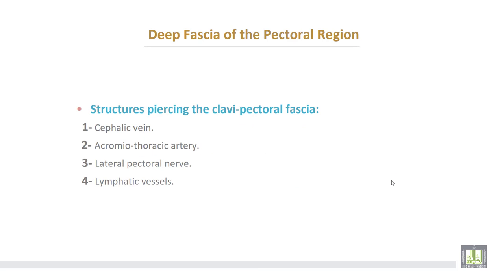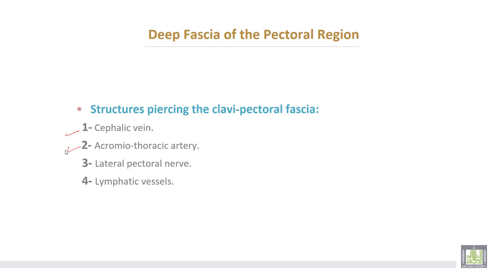The structures piercing the clavipectoral fascia are: number one, the cephalic vein; number two, the acromiothoracic artery; number three, the lateral pectoral nerve; and lymphatic vessels.